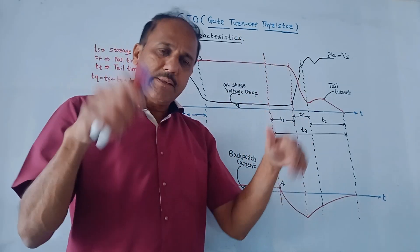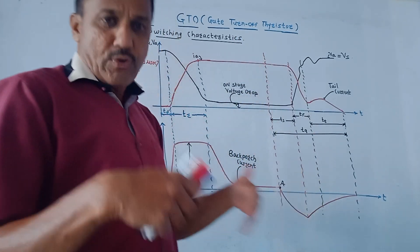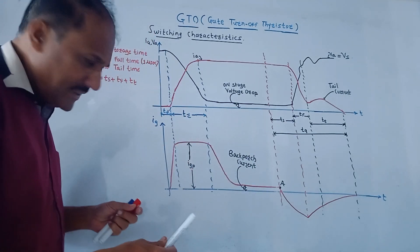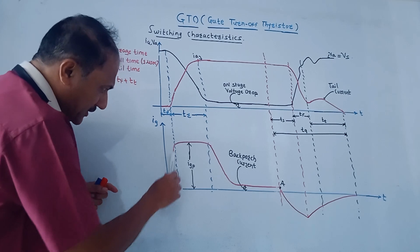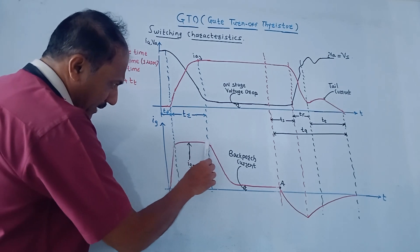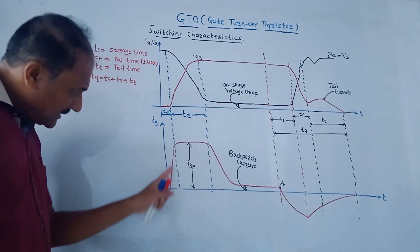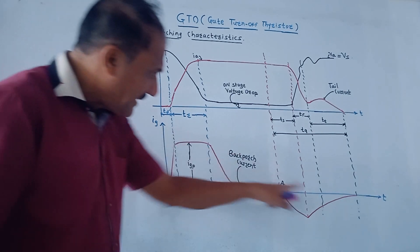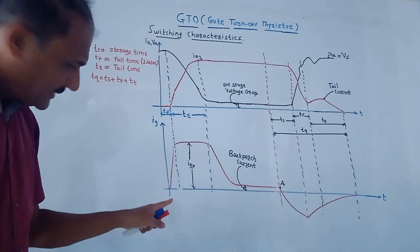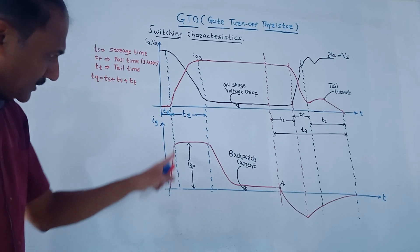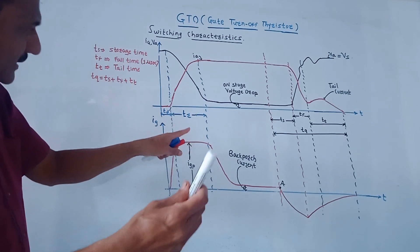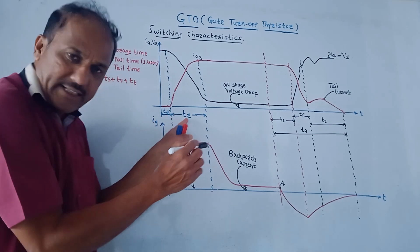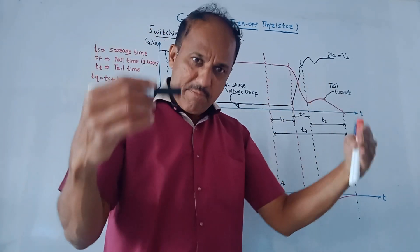The turn on process of GTO is similar to that of SCR. To turn on the GTO, we apply a steep gate pulse, as shown in the graph of Ig versus time. The delay time is td and the rise time is tr, which are the same as that of SCR.